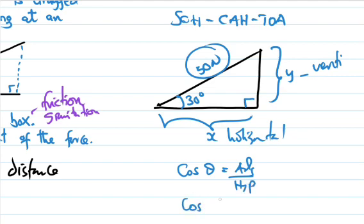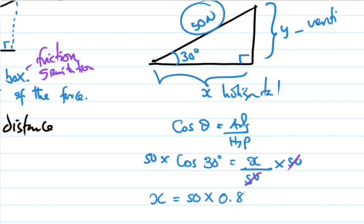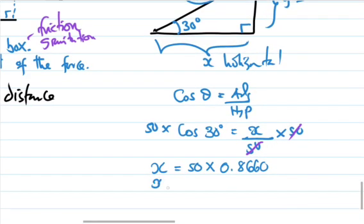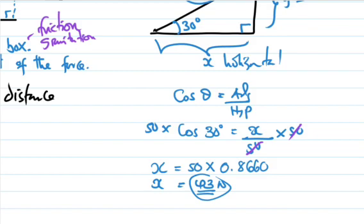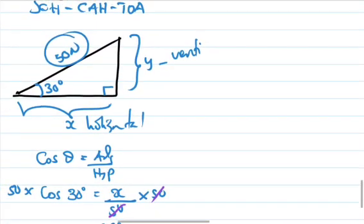Cosine theta — that's 30 degrees — is equal to adjacent over hypotenuse, so cosine 30 = x divided by 50. To find x we multiply both sides by 50, so x = 50 multiplied by cosine 30 degrees. Cosine 30 is 0.8660, so x is approximately 43.3. This is our force in the horizontal direction.